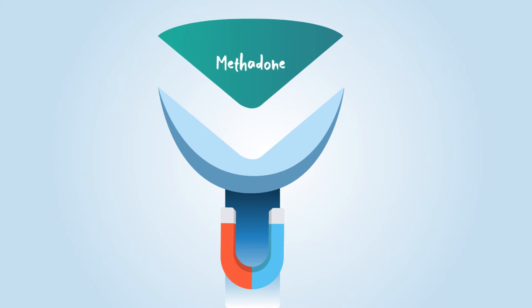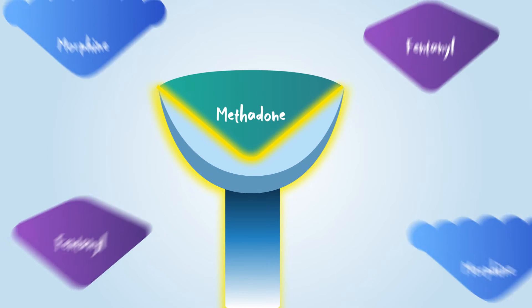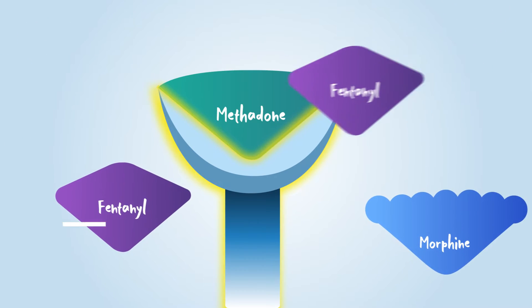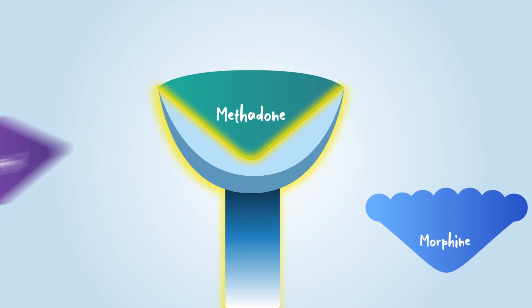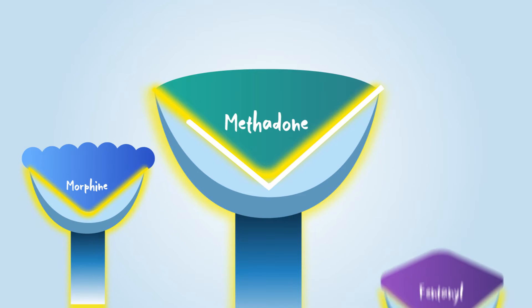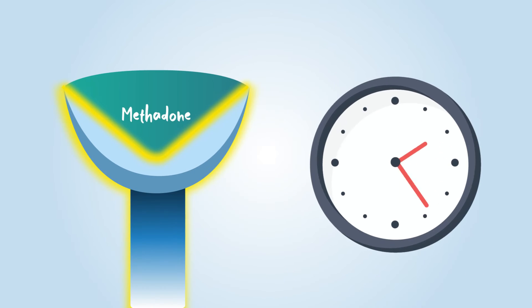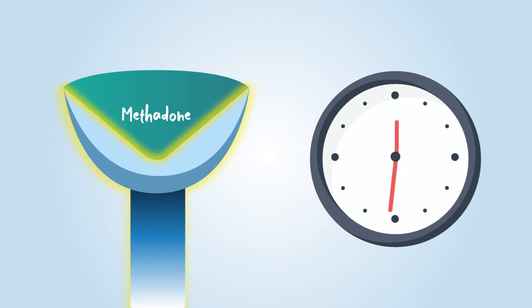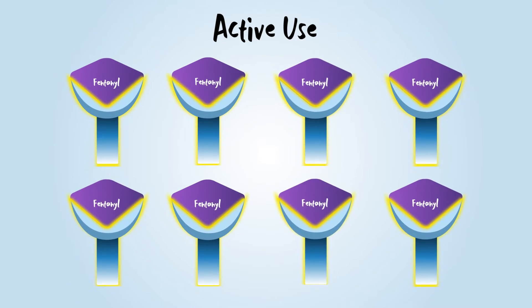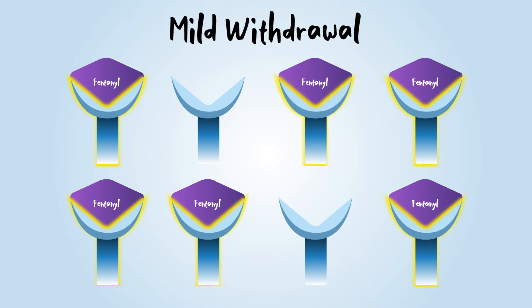Methadone is a full agonist opioid. It has a high affinity for the mu opioid receptor. At a therapeutic dose, methadone prevents other opioids from binding to the receptor site, decreasing overdose risk. Like other full agonists, such as morphine and fentanyl, methadone fully activates the mu opioid receptor. Methadone is metabolized slowly, preventing withdrawal symptoms and cravings. Methadone can be administered any time prior to the onset of opioid withdrawal, or in mild opioid withdrawal, as it fully activates the opioid receptor.